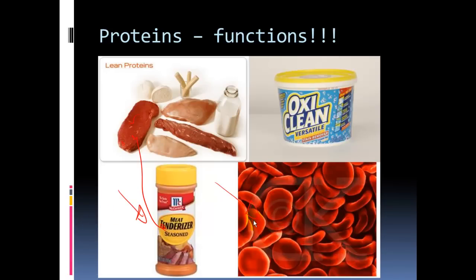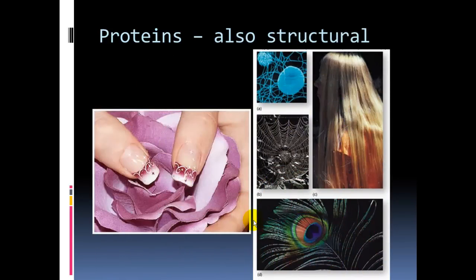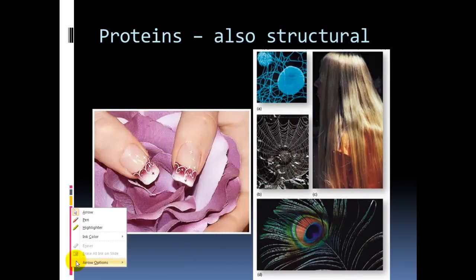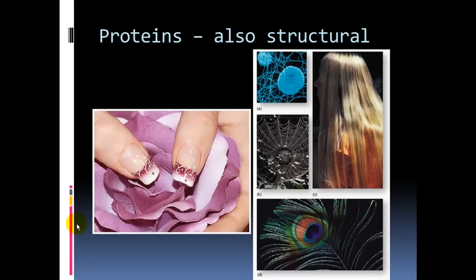Hemoglobin, found in red blood cells, transports oxygen through our blood. Other protein examples include structural proteins in nails, hair, spider webs, and feathers.